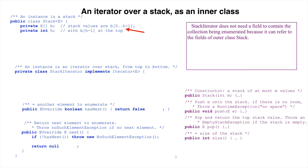But we do need a field to help us keep track of the enumeration. Since the enumeration is from the stack top to the stack bottom, we can use a field n, declared and described as shown on screen.